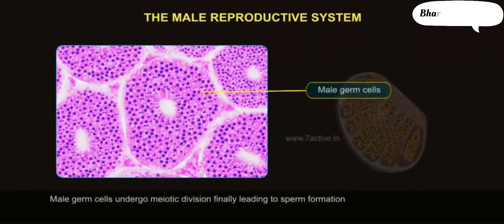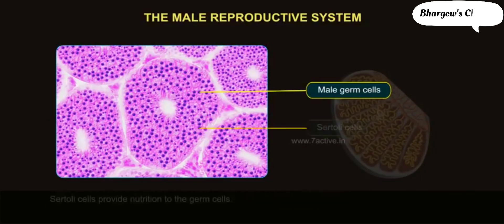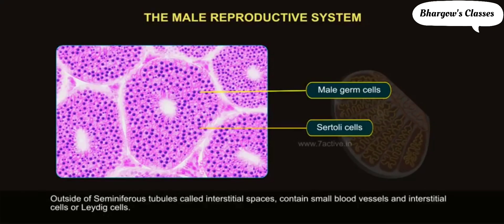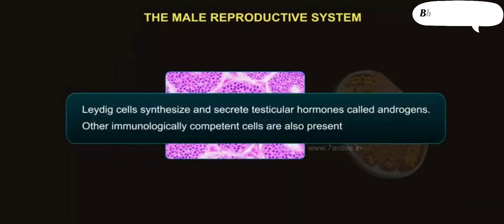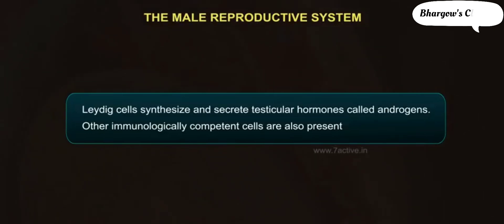The seminiferous tubules are lined on the inside by two types of cells: male germ cells, which undergo meiotic division finally leading to sperm formation, and Sertoli cells, which provide nutrition to the germ cells. Outside the seminiferous tubules, the interstitial spaces contain small blood vessels and interstitial cells or Leydig cells. Leydig cells synthesize and secrete testicular hormones called androgens. Other immunologically competent cells are also present.